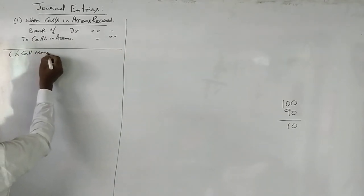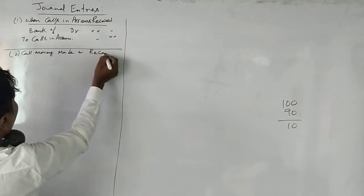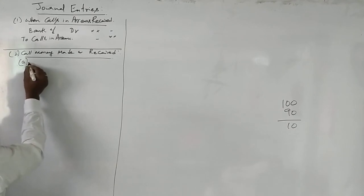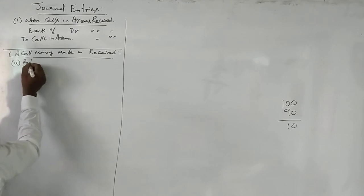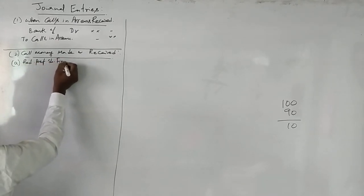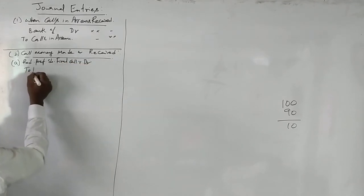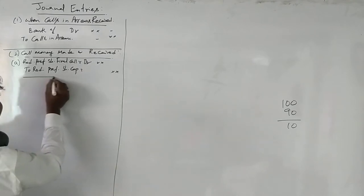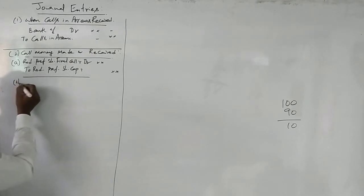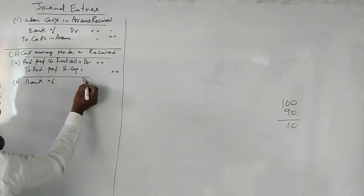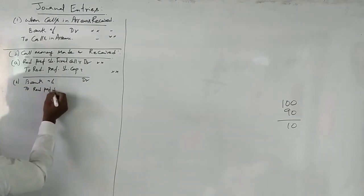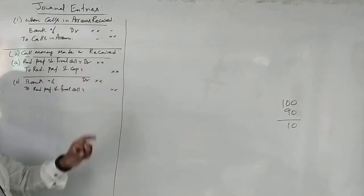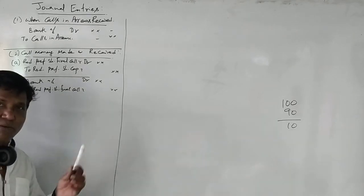The second entry for call money received is: bank account debit to redeemable preference share final call account. So we first show that the preference share final call money is due, and then we show that the preference share final call money has been received.